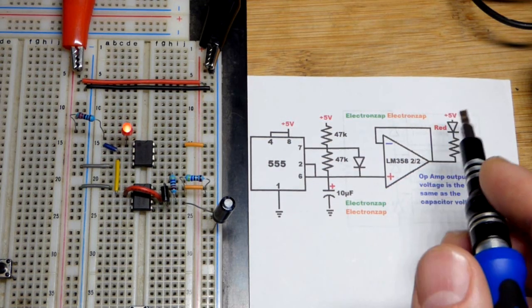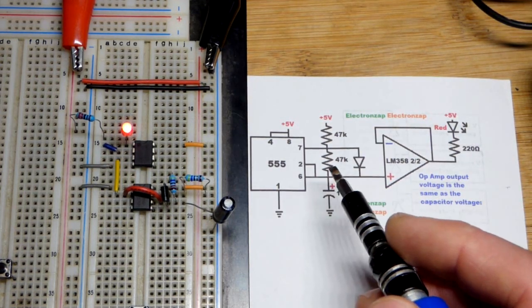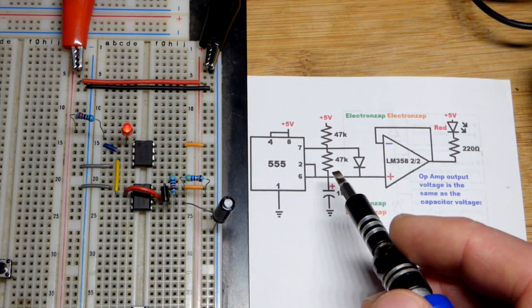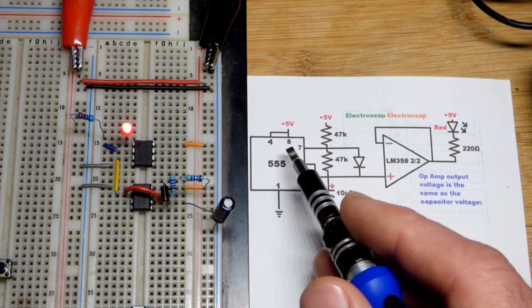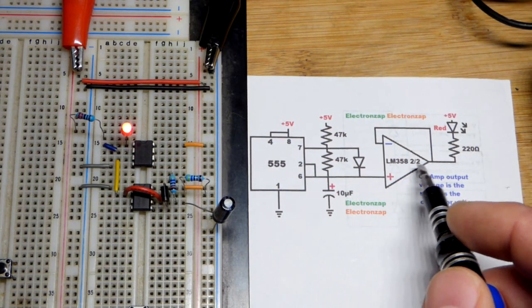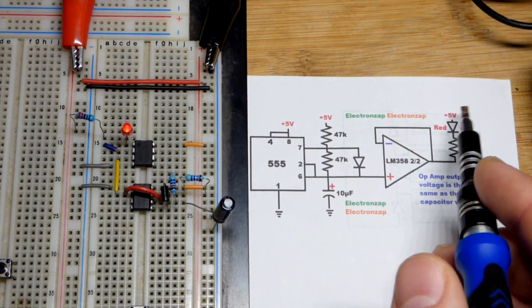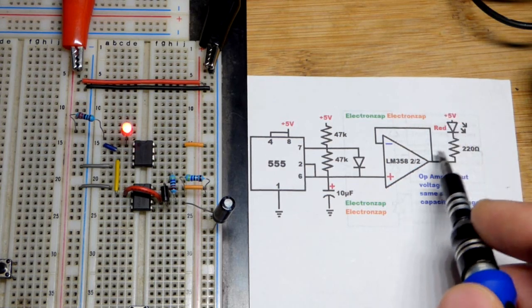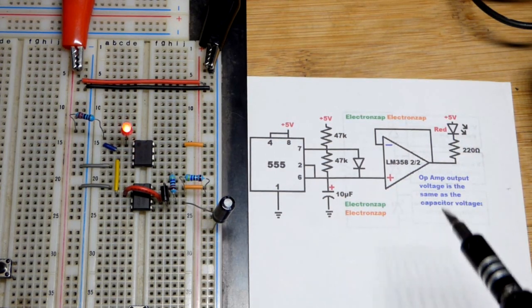When the capacitor reaches two thirds supply voltage then it starts discharging through pin seven, its voltage goes down bringing down the voltage. Lower voltage there since the higher voltage is there makes the LED brighter. Since this is wired astable it just keeps repeating.